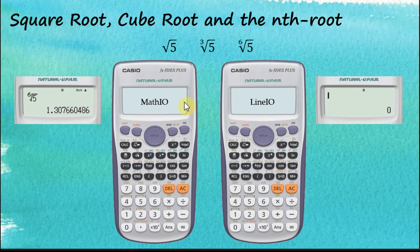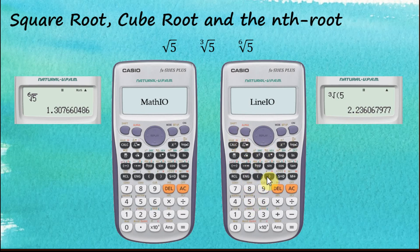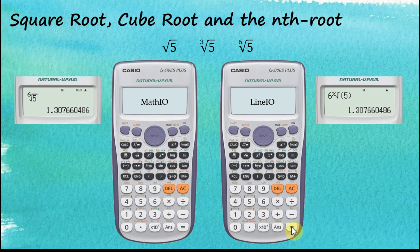For Linear input/output — square root: press square root, then 5, close bracket, and equal. The answer is given in decimal form, not root form. For cube root: Shift, cube root, then 5, close bracket, and equal. For the 6th root of 5: start with 6 first, then Shift, root, then 5, close bracket, and equal.